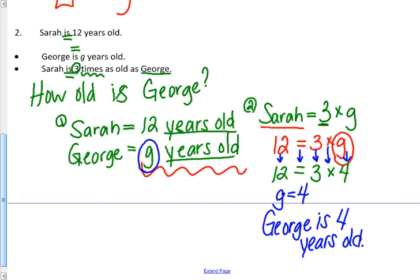And we can go back to our original information and see if we're right. So Sarah is 12 years old. George is G years old, which now we know is four. George is four years old. Sarah is three times as old as George, which means three times four equals Sarah's age, which is 12. Is that correct? Check. That is correct. So we know that we did it in the right way.